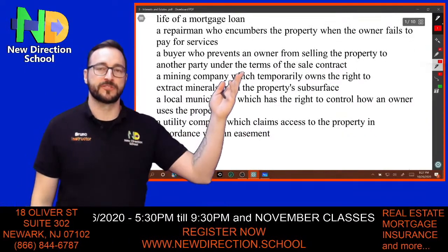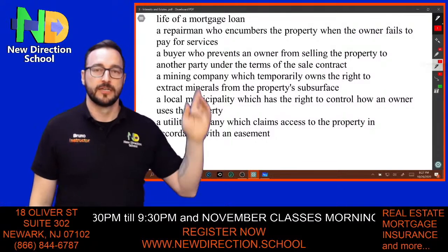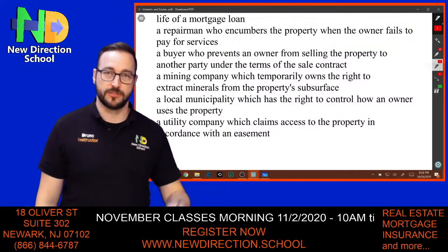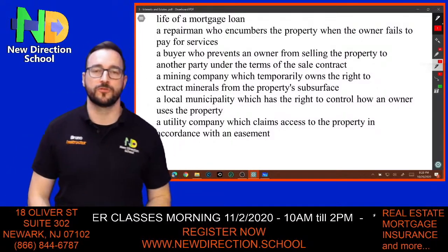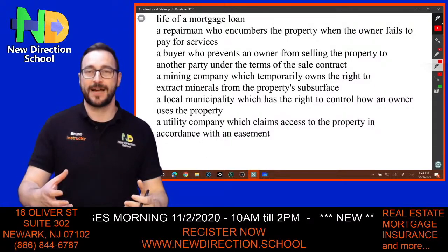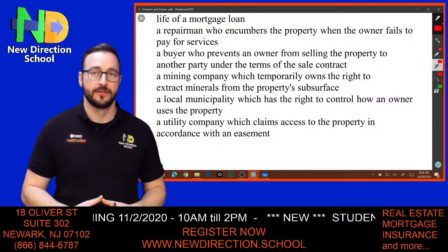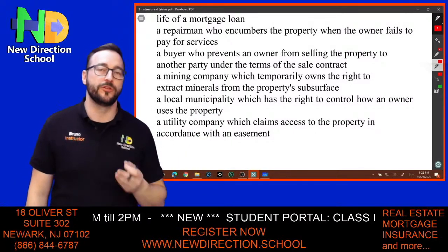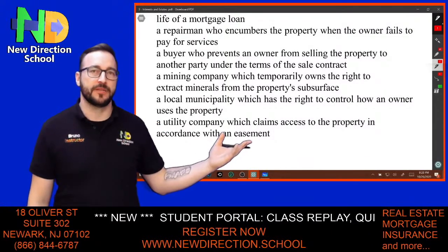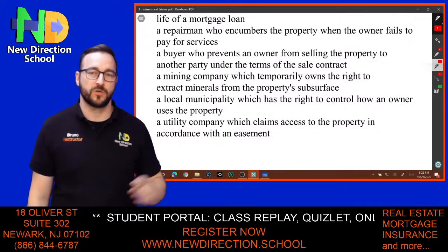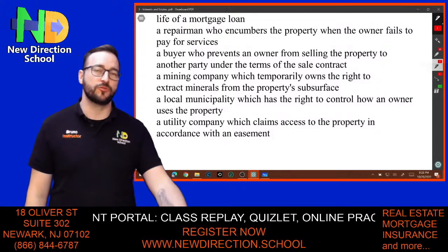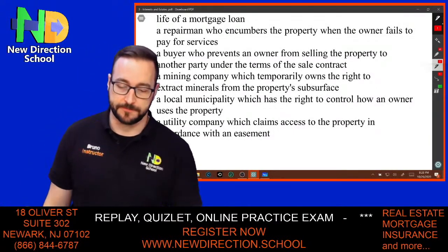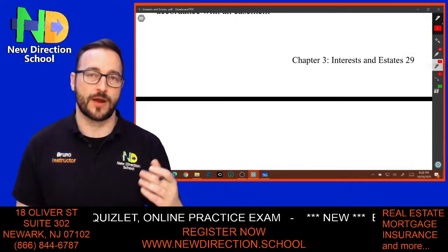A buyer can prevent an owner from selling to another party under a sales contract. A mining company can temporarily own rights to extract minerals from the subsurface. A local municipality has the right to control what an owner can do with the property — for example, in a residential area you can't build a shopping center. A utility company can access the property under an easement to fix water, sewer, or electricity. These are all interests — benefits or rights in someone's property.